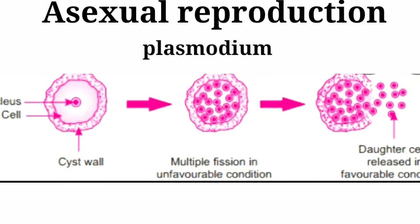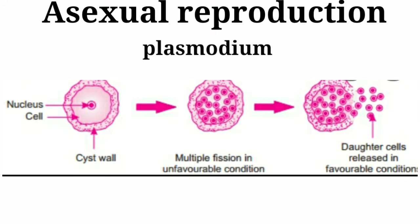When a parent cell divides into many small daughter individuals simultaneously, it is called multiple fission. Example: plasmodium.